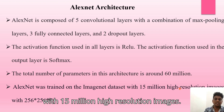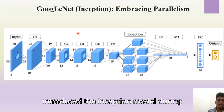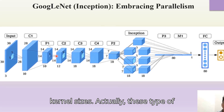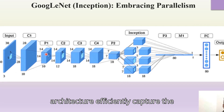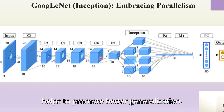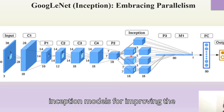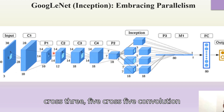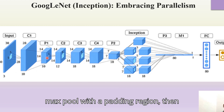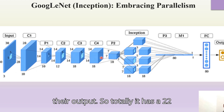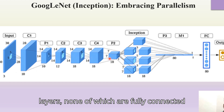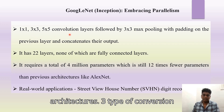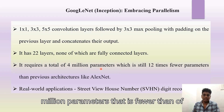The next type is GoogLeNet, also called the Inception model, introduced in 2014. It employs parallel convolution operations with different kernel sizes — 1x1, 3x3, and 5x5 — followed by a 3x3 max pool with padding, concatenating all their outputs. This architecture efficiently captures features at multiple scales, promoting better generalization. GoogLeNet has 22 layers, none of which are fully connected layers, and requires only 4 million parameters — 12 times fewer than previous architectures.